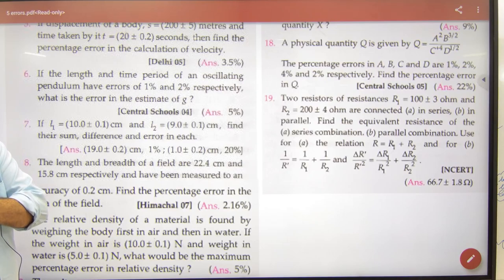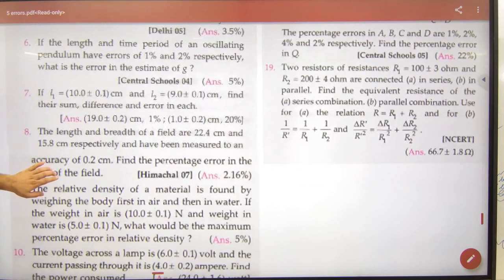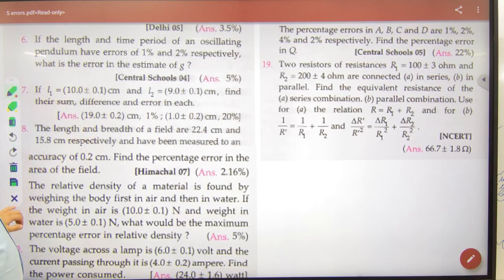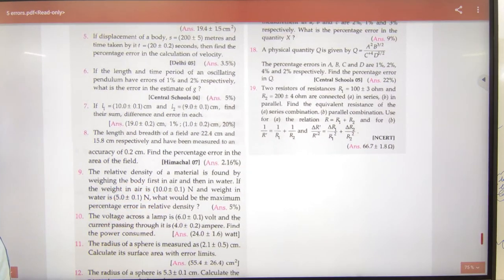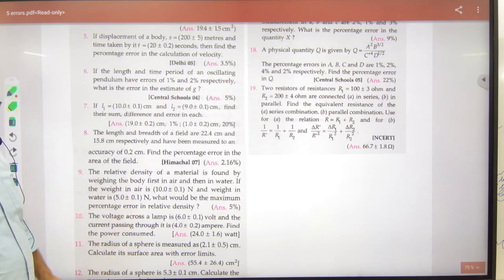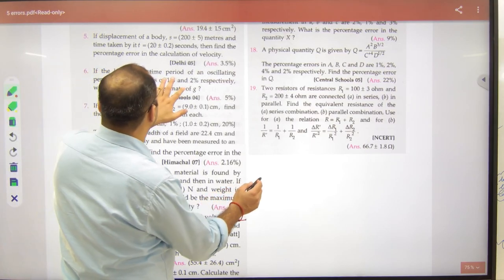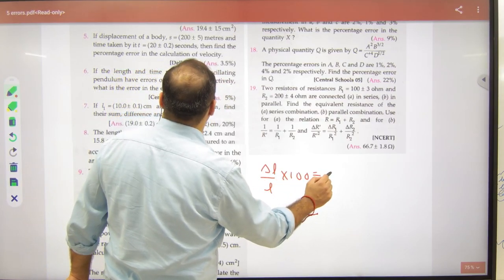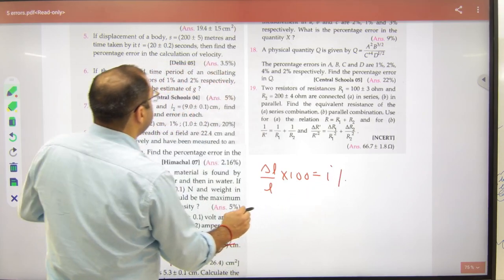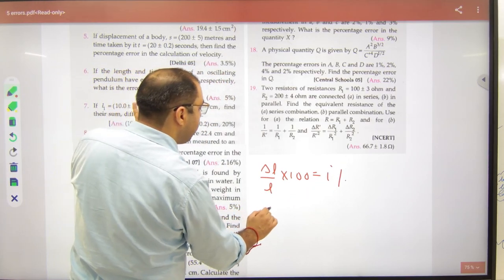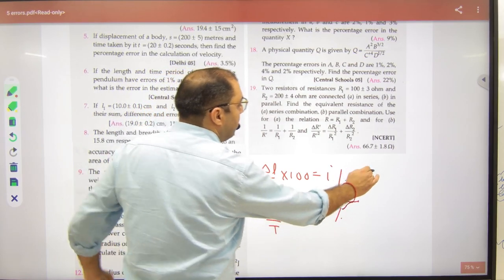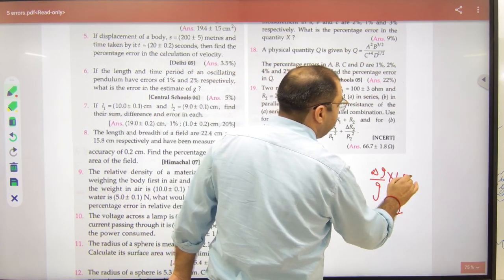t is equal to 2π under root of l by g, this question. If the length and time period of an oscillating pendulum have errors of 1% and 2% respectively, then you can take the percentage error in g. So, first of all, length percentage error, this is what? This is 1%, percentage error. Time period, time period means delta t by t into 100, which is given 2%, and you can take the percentage error, delta g by g into 100, what is the point clear?